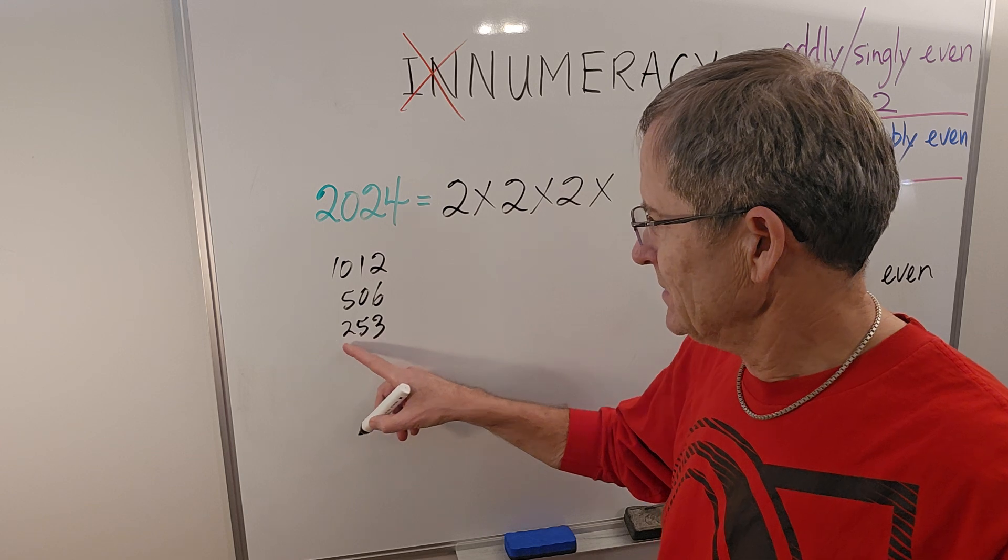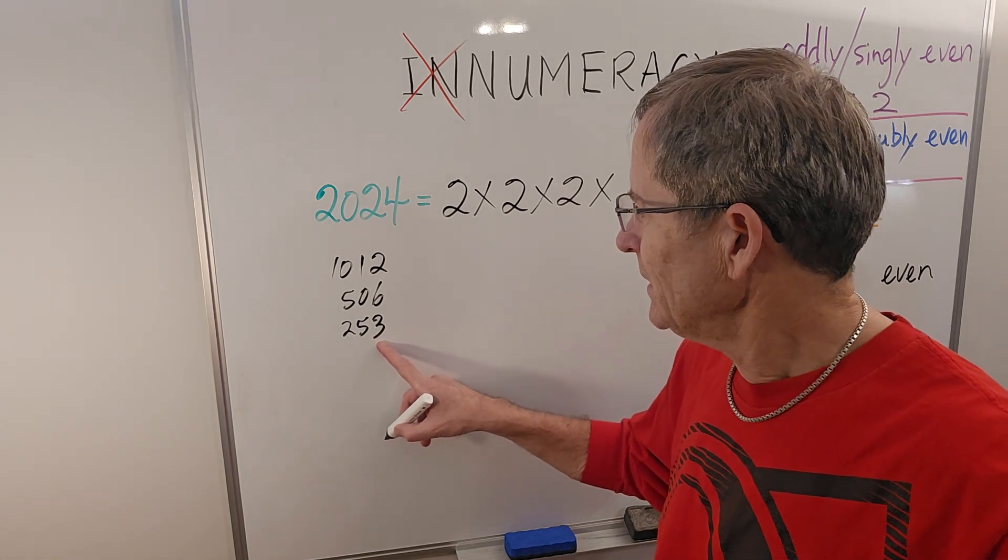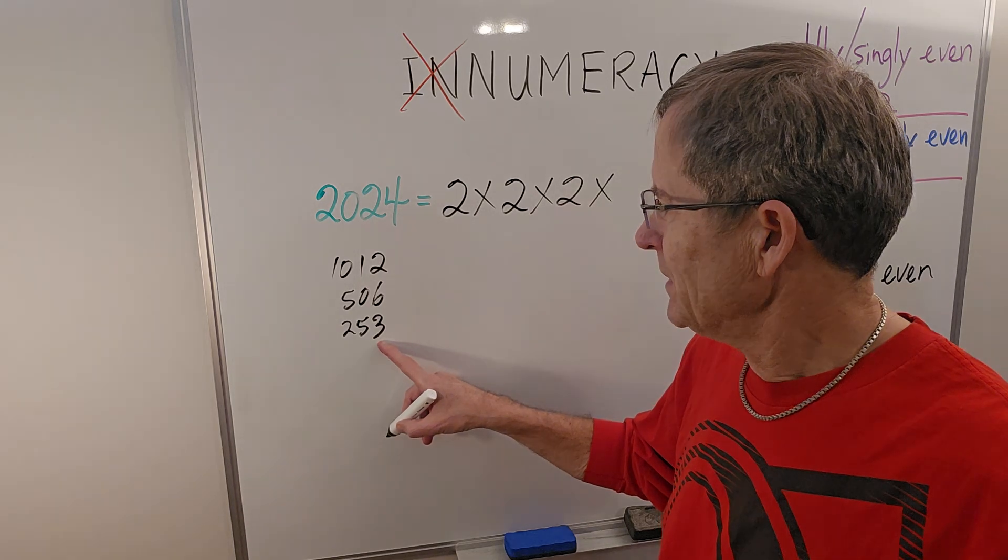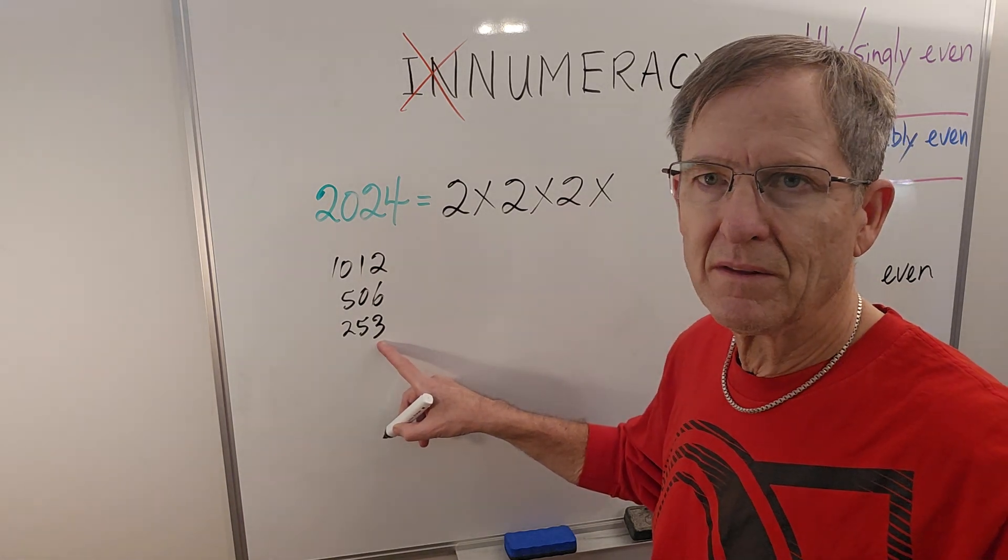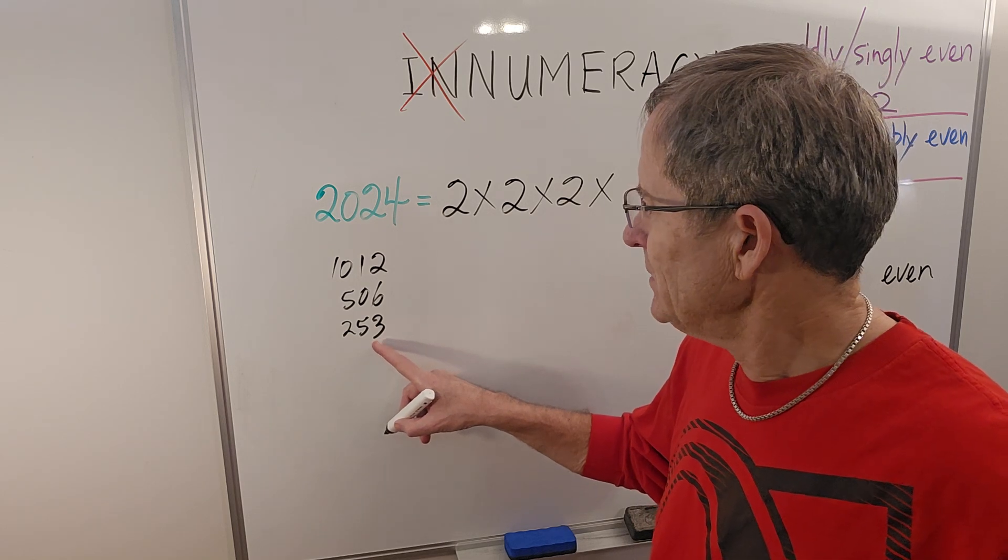What about seven? Well, it turns out it's not divisible by seven. You can check with the calculator. You don't bother to check nine, because if it was divisible by nine, it would have to be divisible by three. So then you try 11.